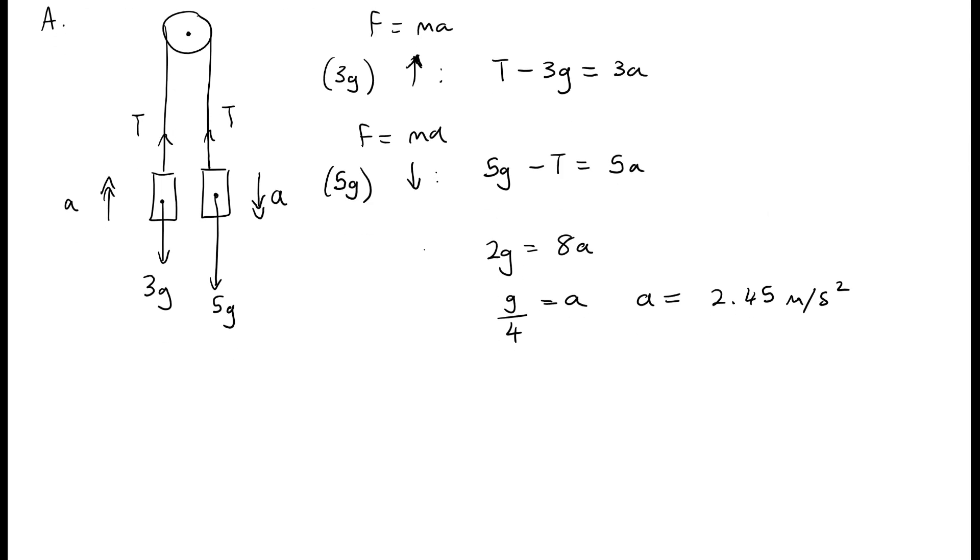As with any simultaneous equations, once we have one of the variables we can easily find the other. So we'll take the top equation, and T is equal to 3a plus 3g. So T is equal to 3 times 2.45 plus 3 times 9.8. T is 36.75.